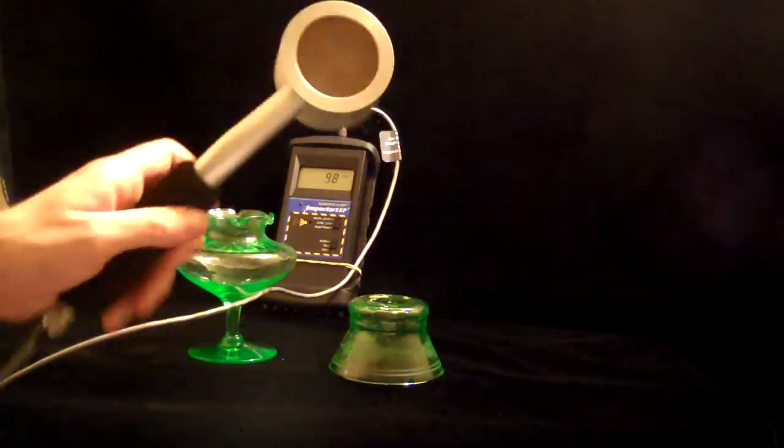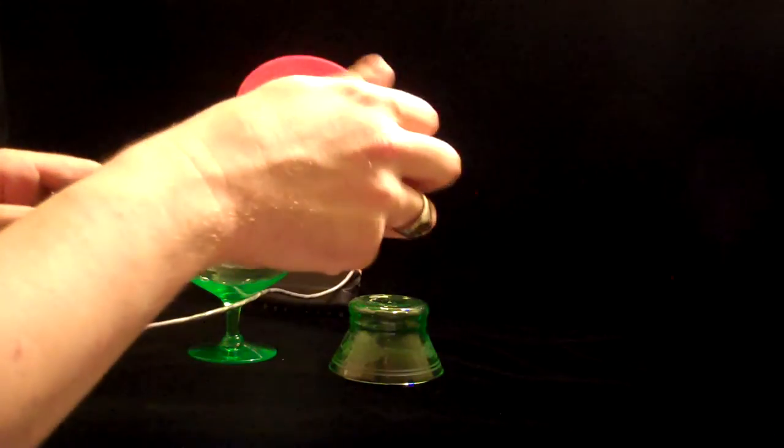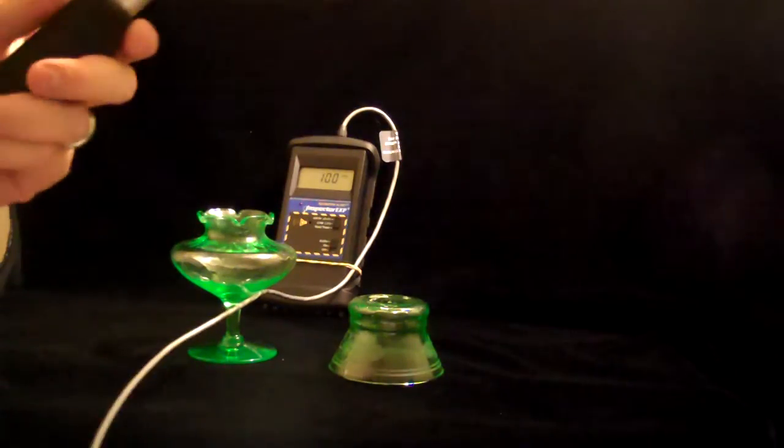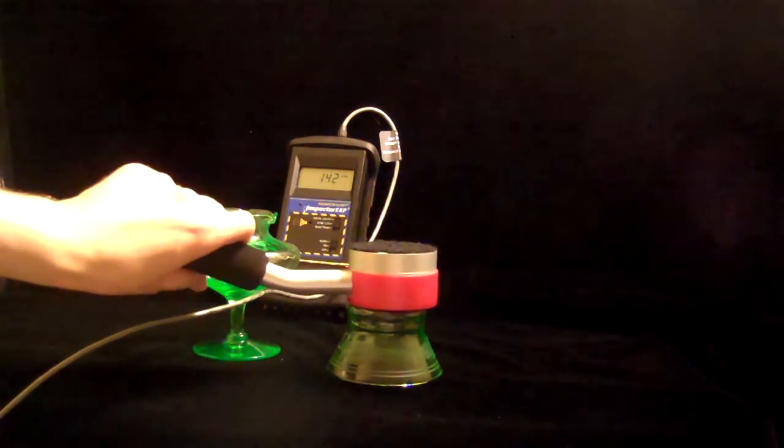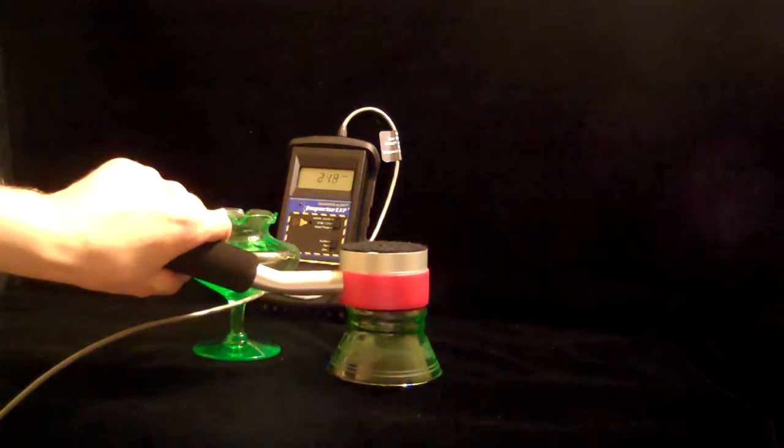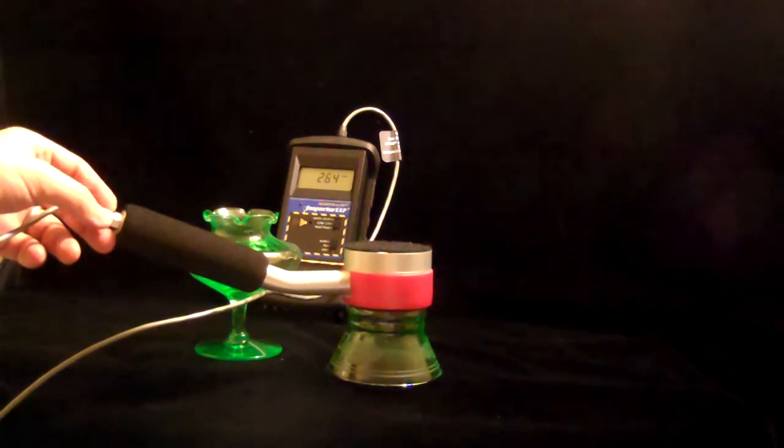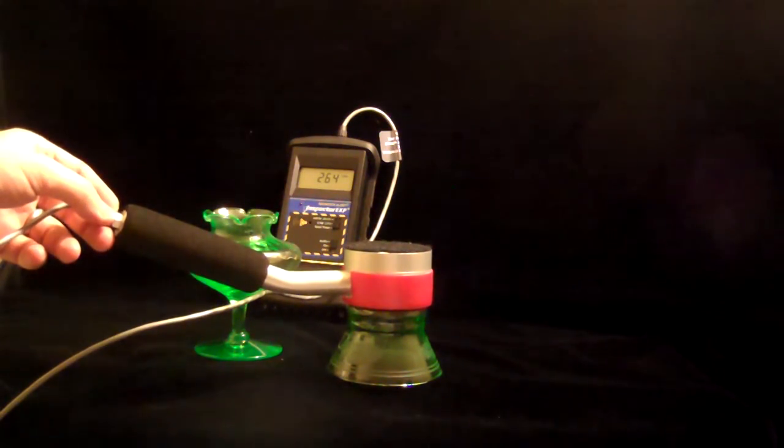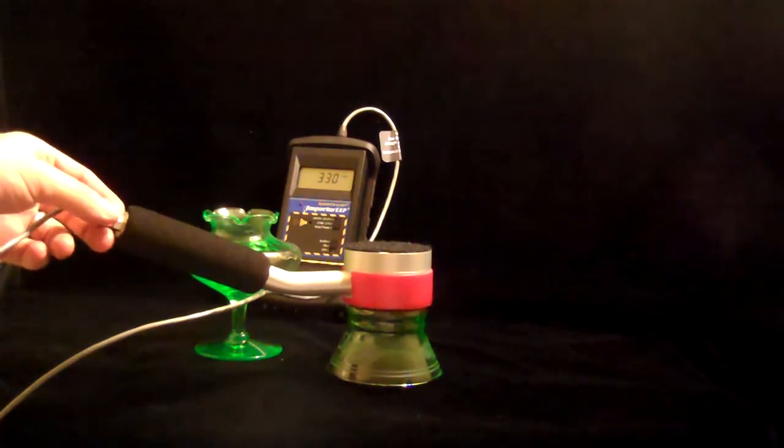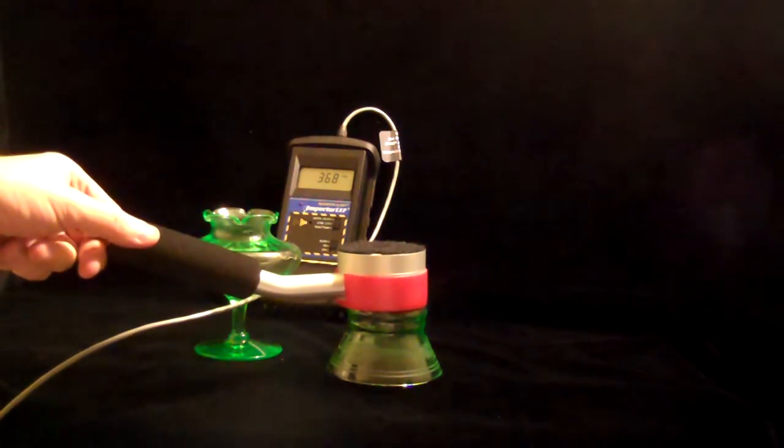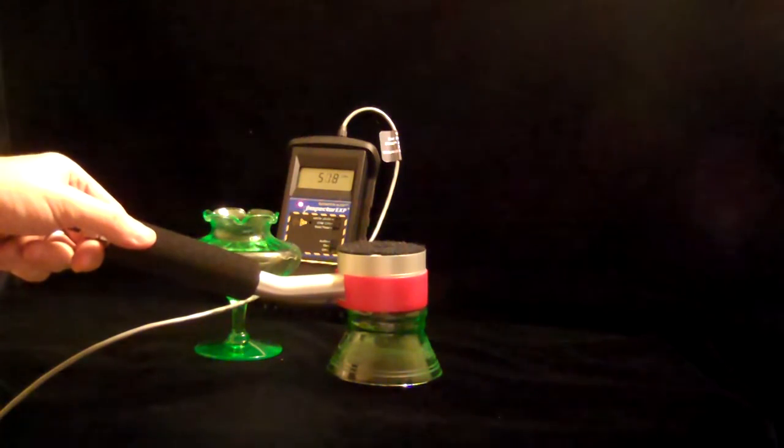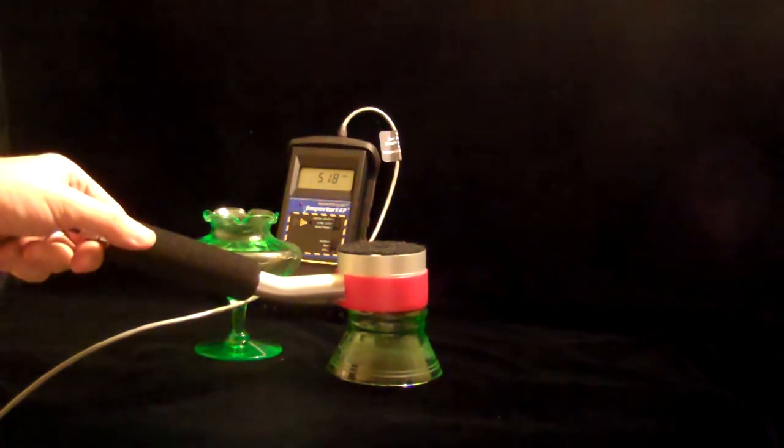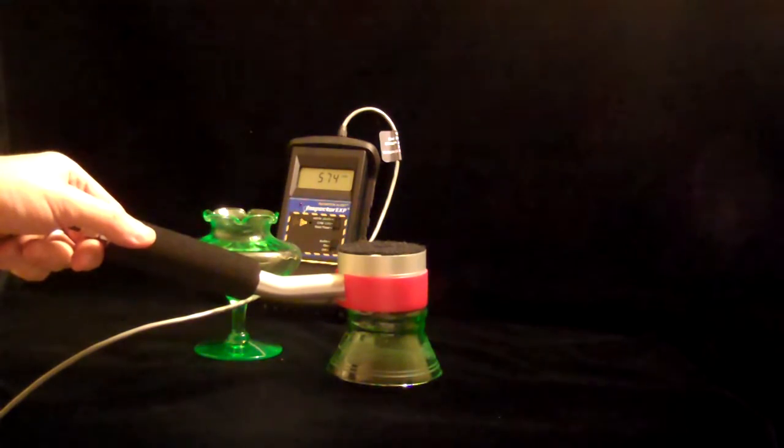Turn it over. Much different effect. Let's see what the plastic cap does. This plastic cap shields a lot of alpha and beta. You're still getting a reading. But it's not as high. Almost 600 counts.